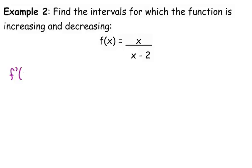So F prime of x here is low d high minus high d low over low squared. Let's go ahead and simplify that numerator, because it will simplify.